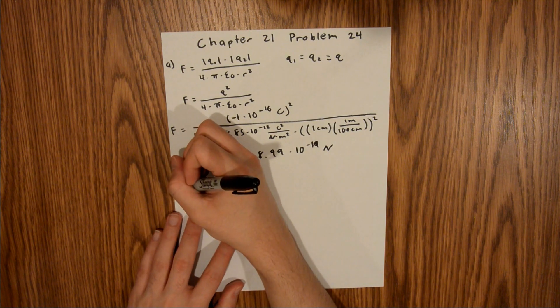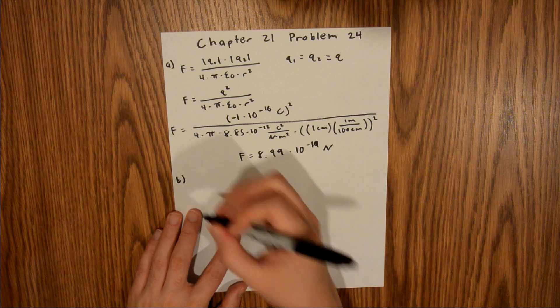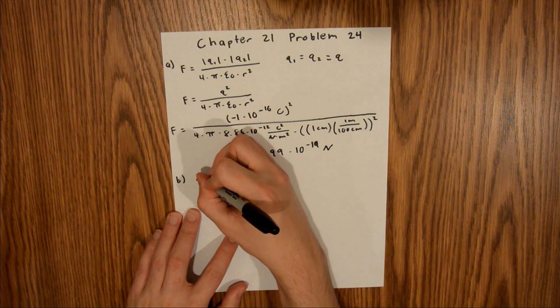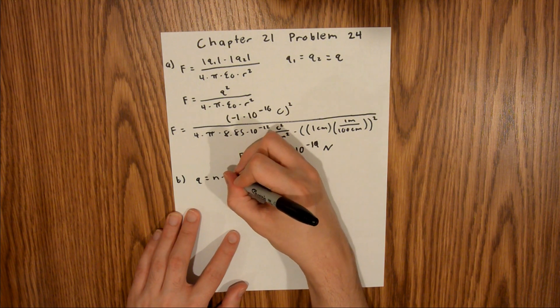In Part B, we are asked how many excess electrons are on each drop. So charge is equal to the number of electrons times the charge of an electron.